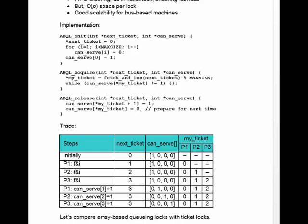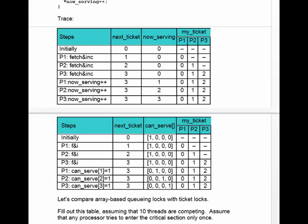There's a trace to compare with the ticket lock trace. The value of next-ticket is exactly the same for all of the thread actions, and so are the fetch-and-increments — they're the same in the ticket lock as in the array-based queuing lock. The difference is that instead of incrementing a 'now serving' scalar, here we set the next canServe variable equal to one. The canServe array has zeros in every position but one; when we start out, there's a one in the zeroth position.